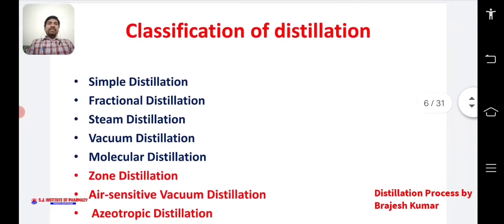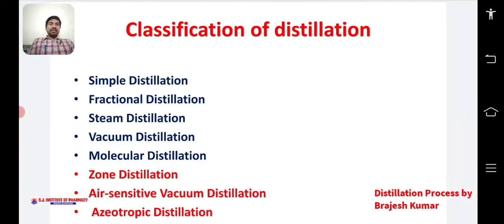Now we will discuss the classifications of distillation. A distillation process can be classified into the following types: simple distillation, fractional distillation, steam distillation, vacuum distillation, molecular distillation, zone distillation, short-path vacuum distillation, and azeotropic distillation. However, in this chapter we will discuss only simple, fractional, steam, vacuum, and molecular distillations as per the syllabus.